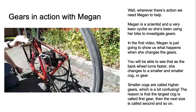Nicely done Megan. You can see that as the back wheel was turning faster and getting easier to turn, Megan was changing the gear to a higher and higher gear — which is a smaller and smaller cog — which makes the wheel turn even faster. That's a really good use of gears.